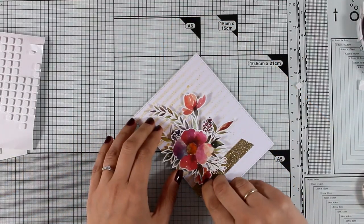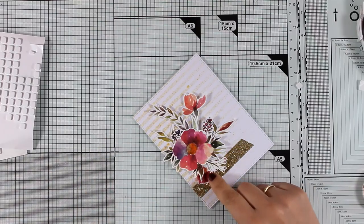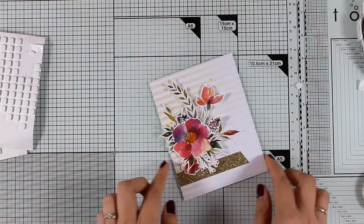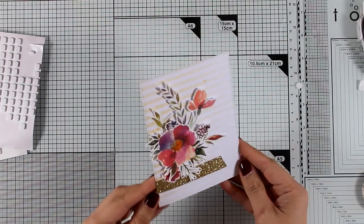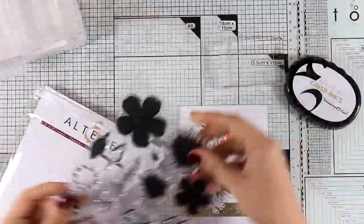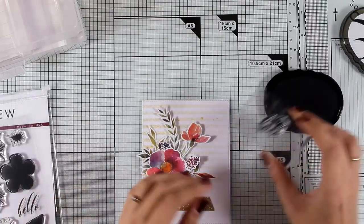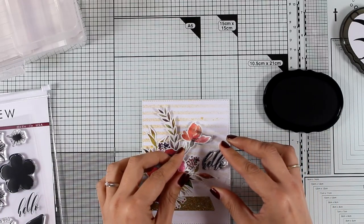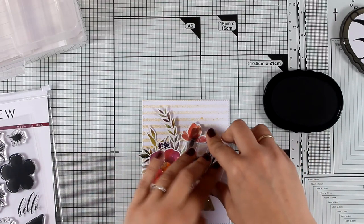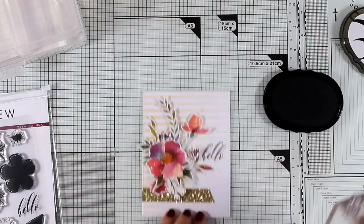So I'm going to stick the last little flower down there and now it's time to stamp my sentiment. Now this is a flower card which means that it would be perfect for pretty much any occasion. In my case I am going to stamp the word hello from the Sakura Blossom stamp set. This has beautiful sentiments in a beautiful font. I just love this stamp set.